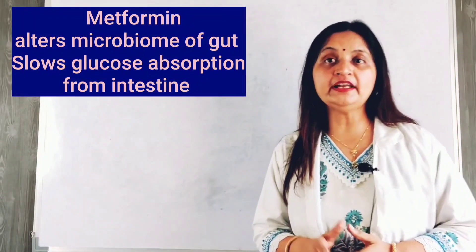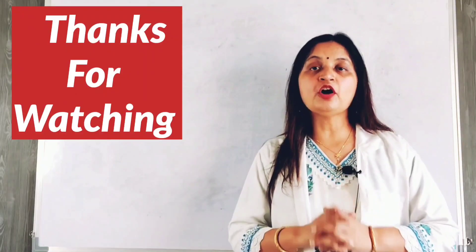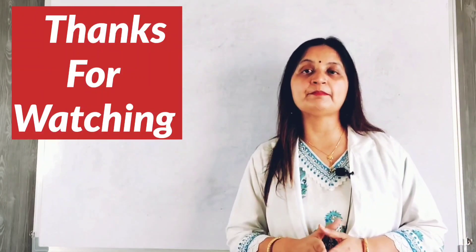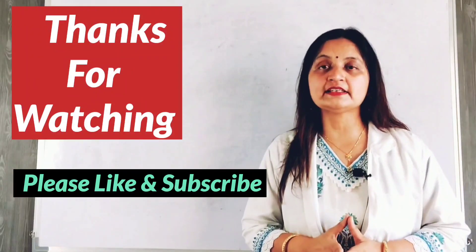In addition, metformin is useful in diabetic patients with dyslipidemia. Through AMP-activated protein kinase activity, metformin causes inhibition of transcription factors responsible for lipogenesis, thereby reducing lipogenesis and fat accumulation in the liver. It also enhances fatty acid oxidation in the liver, reduces levels of lipoproteins such as LDL and VLDL, and increases HDL, which is considered a protective lipoprotein. In this way, metformin improves the lipid profile and is useful in diabetic patients with dyslipidemia and increased risk of cardiovascular events.